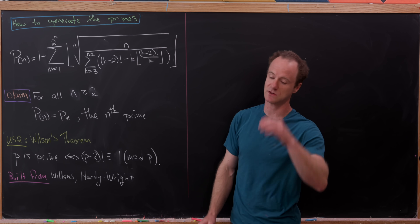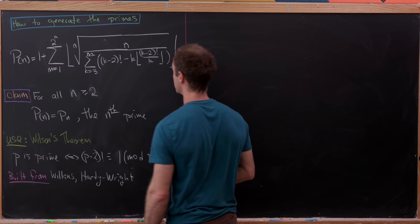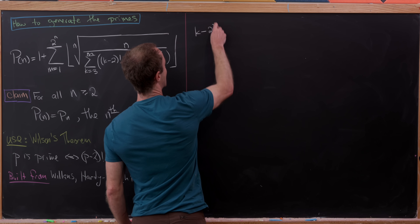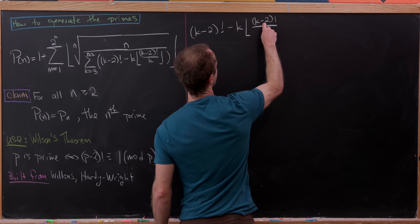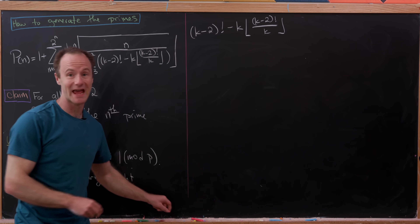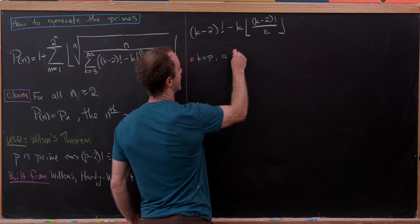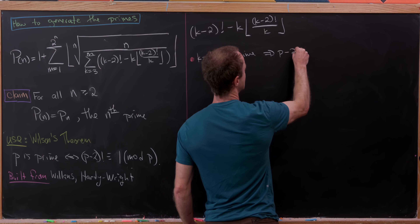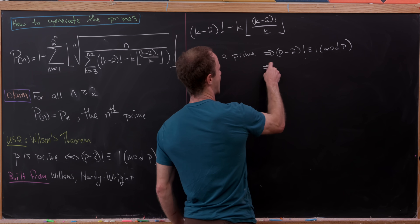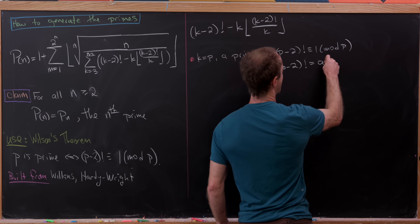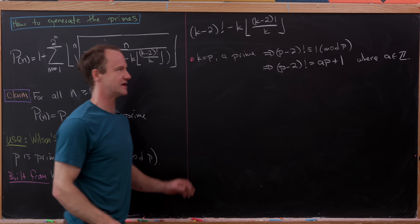Let's start by looking at the inner part of this sum, specifically (k minus 2) factorial minus k times the floor of (k minus 2) factorial over k, working case by case. Starting with the case when k equals p, a prime: Wilson's theorem tells us that (p minus 2) factorial is congruent to 1 modulo p, which means (p minus 2) factorial equals a times p plus 1 for some integer a — that's essentially the definition of congruence mod p.